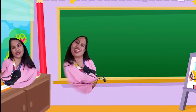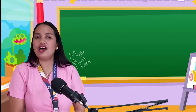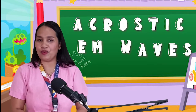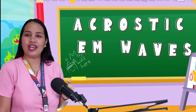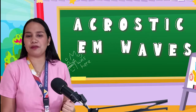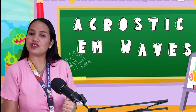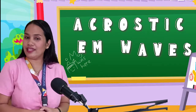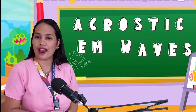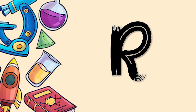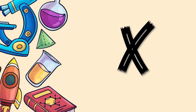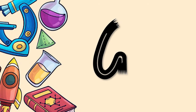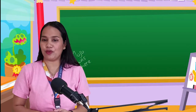Let's move on to an activity. Let us perform the activity entitled Acrostic Electromagnetic Waves. Do you still remember the different regions of the electromagnetic spectrum? Now, try to compose an acrostic — a form of poetry where the first or last letter of each line spells a name, word, or phrase. We have the letters R, M, I, V, U, X, and G. Can you state some uses or applications of electromagnetic waves?